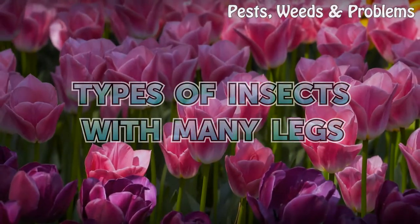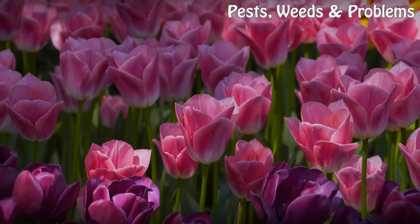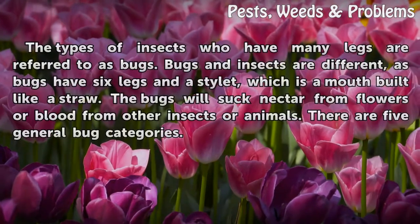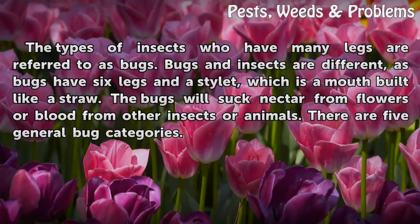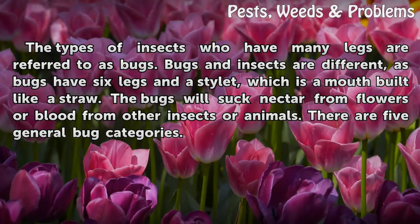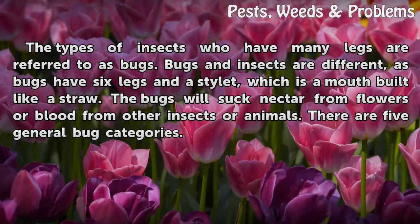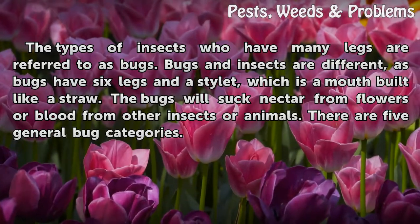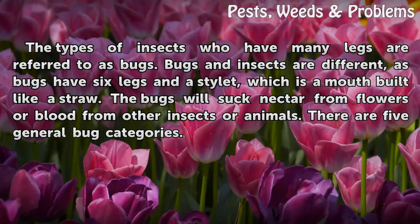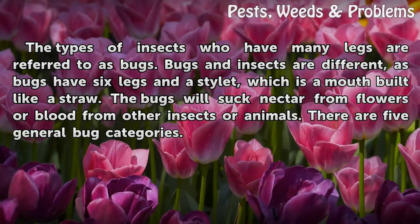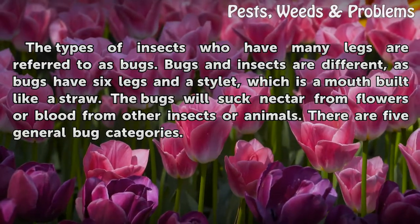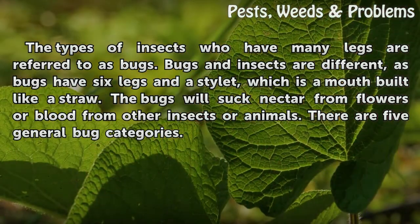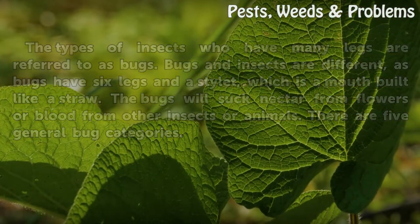Types of Insects with Many Legs. The types of insects who have many legs are referred to as bugs. Bugs and insects are different, as bugs have six legs and a stylet, which is a mouth built like a straw. Bugs will suck nectar from flowers or blood from other insects or animals. There are five general bug categories.